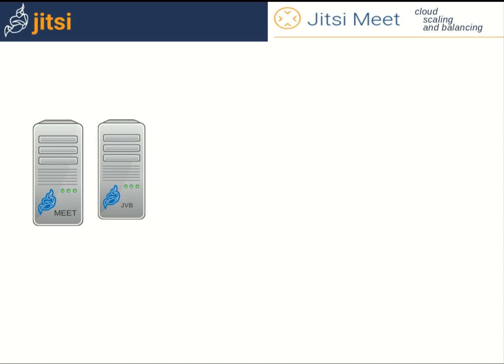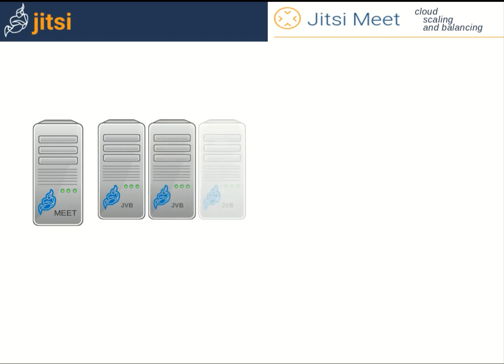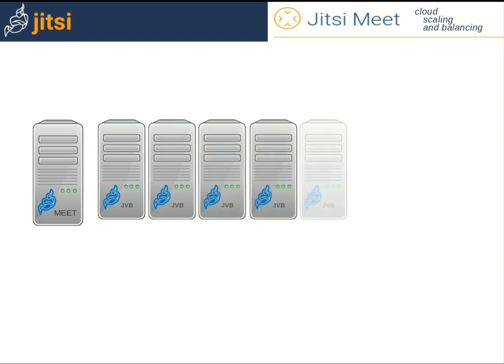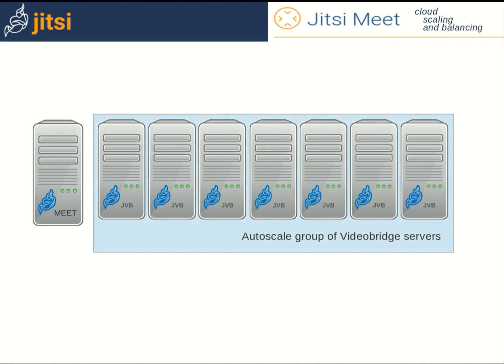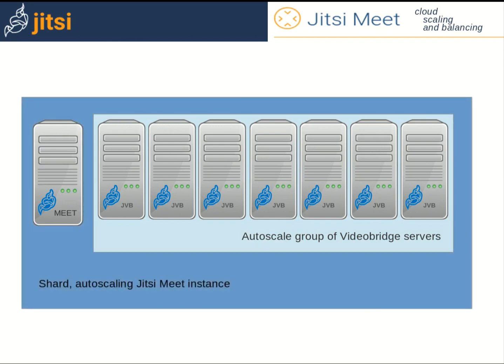For each Jitsi Meet instance, you have one Jitsi Meet server facing the internet and one or more Jitsi Video Bridge servers, grouped together and all connected to the Jitsi Meet server. You can configure them in an autoscale group and think of them and their Meet server as a whole unit. We call this a shard, and it's the basic scaling unit. To scale, you need a shard.